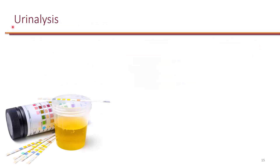Urinalysis is the easiest, cheapest, and most commonly done test in the hospital. Once the urine sample comes to the micro lab, they use dipstick strips for urinalysis — these strips have different sections on them. They dip it into the urine, and as the color of different sections changes, they interpret the result based on the color. This is immediate; you get the results the same day the sample is sent.